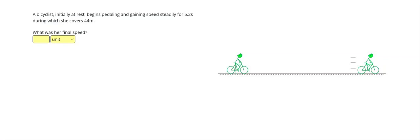A bicyclist initially at rest begins pedaling and gaining speed steadily for 5.2 seconds during which she covers 44 meters. What was her final speed?